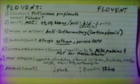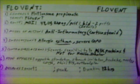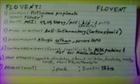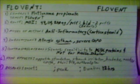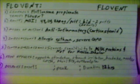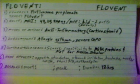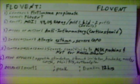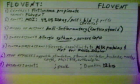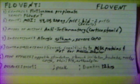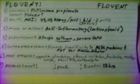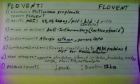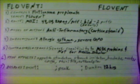Flovent. Generic name: Fluticasone Propionate — F-L-U-T-I-C-A-S-O-N-E P-R-O-P-I-O-N-A-T-E. Trade name: Flovent. Given via metered dose inhaler.